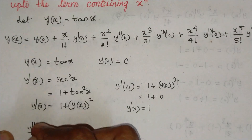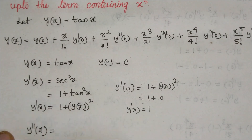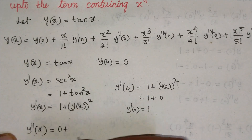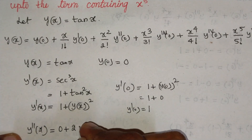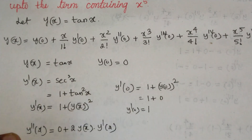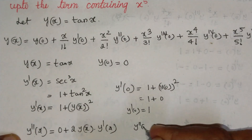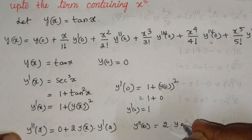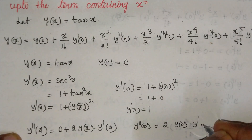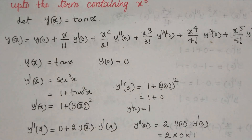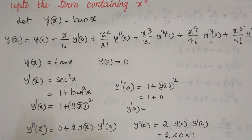Now let us calculate y''(x). Differentiating y'(x) = 1 + [y(x)]², the derivative of 1 is 0, and the derivative of [y(x)]² is 2·y(x)·y'(x). Substituting x = 0: y''(0) = 2·y(0)·y'(0) = 2·0·1 = 0.